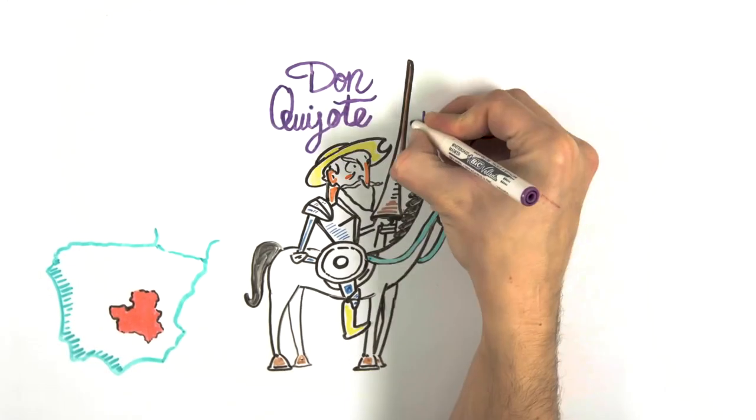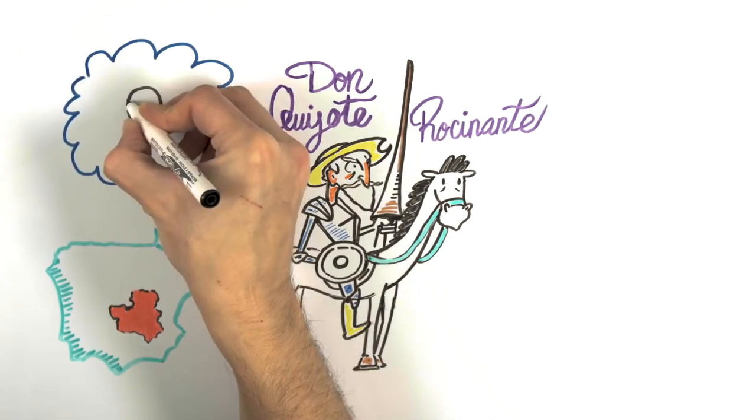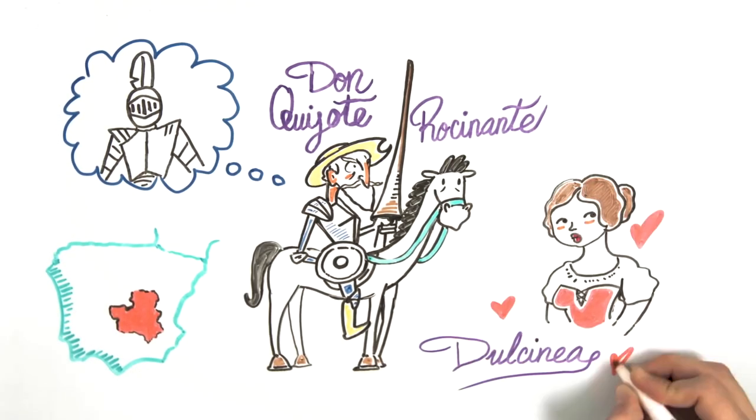He names himself a knight, Don Quixote, and he needs to become a Russian knight and he is looking for a beloved, Dulcinea del Toboso.